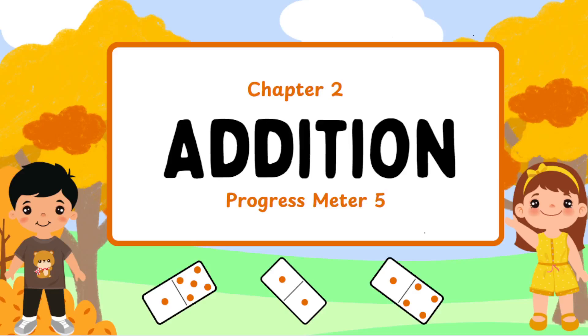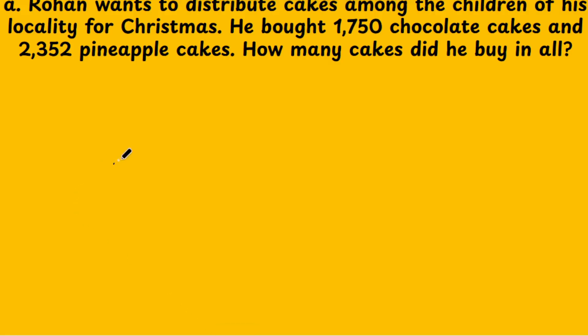Let's now move on to the exercise sums based on word problems. The first sum is: Rogan wants to distribute cakes among the children of his locality for Christmas. He bought 1750 chocolate cakes and 2352 pineapple cakes. How many cakes did he buy in all?